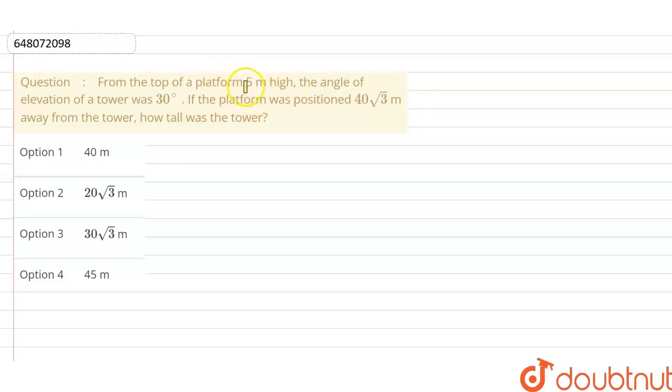आपको ये बताया गया है, कोई platform है, जिसकी height आपको दे रखी है 5 meter. और angle of elevation दे रखा है 30 degree. और बताया गया है आपको कि platform और tower के बीच की जो distance है, वो है 40 root 3 meter. तो आपको ये बताना है, how tall was the tower, यानि कि tower की length क्या है, वो आपको निकालनी है.